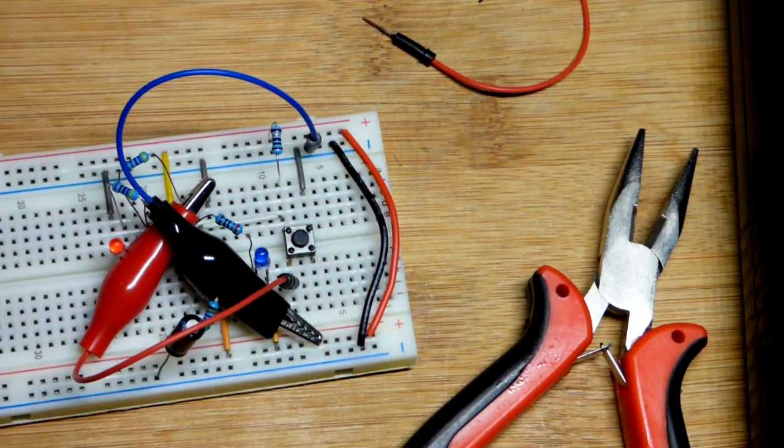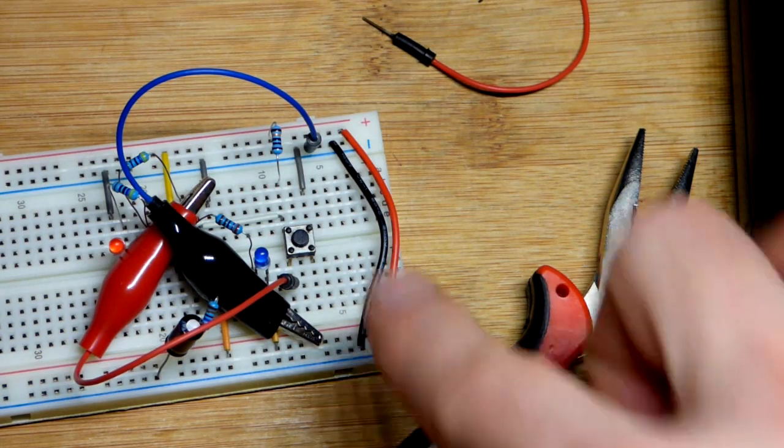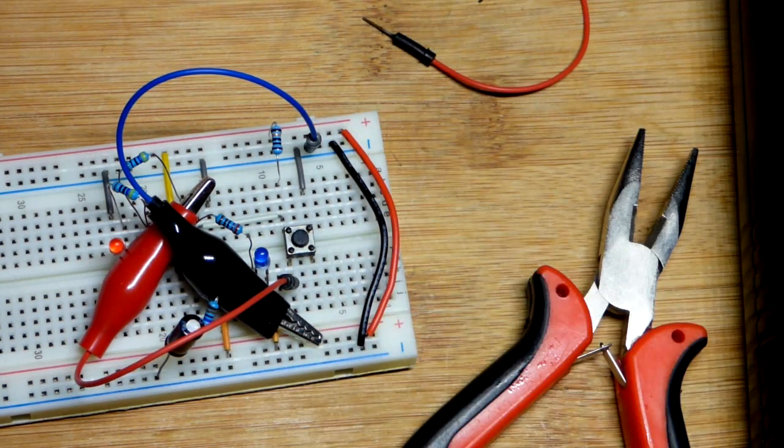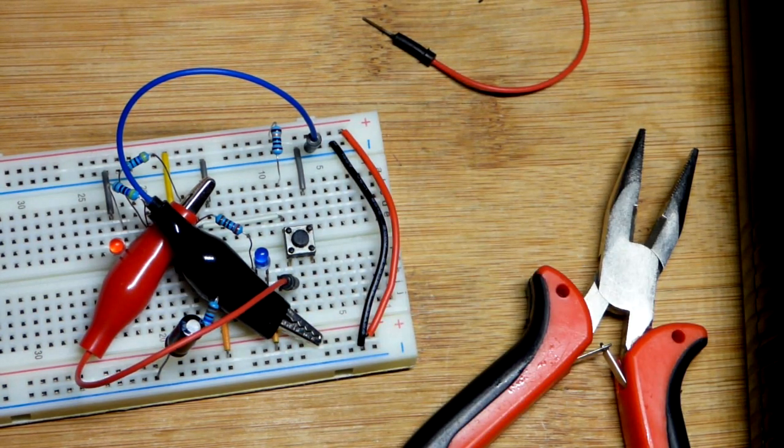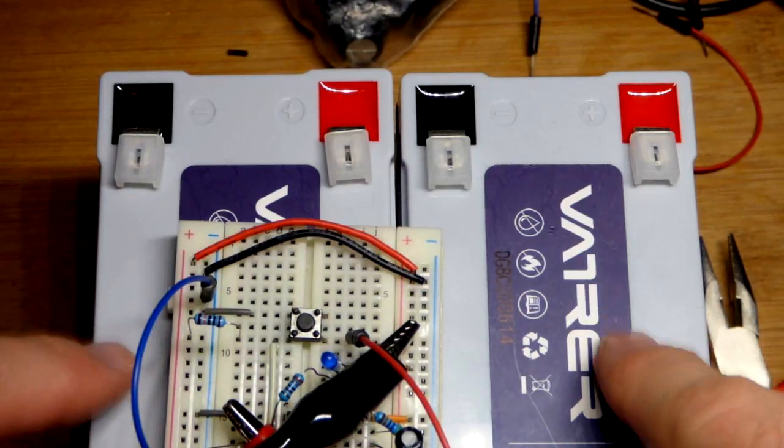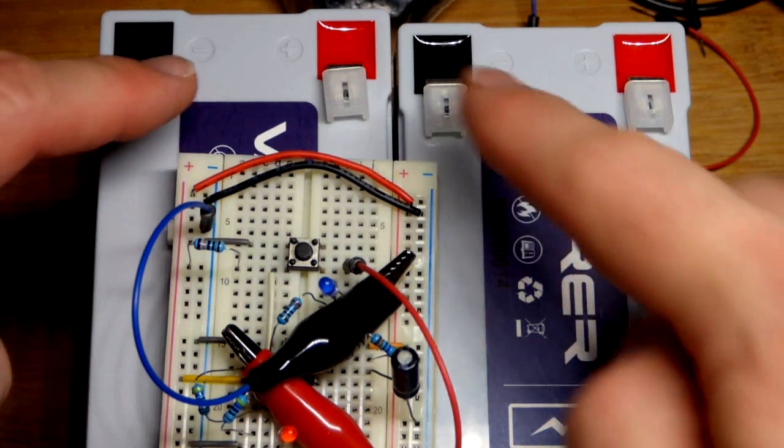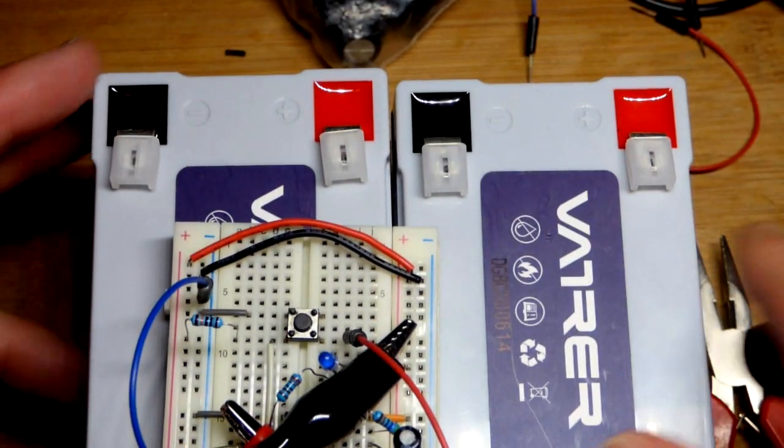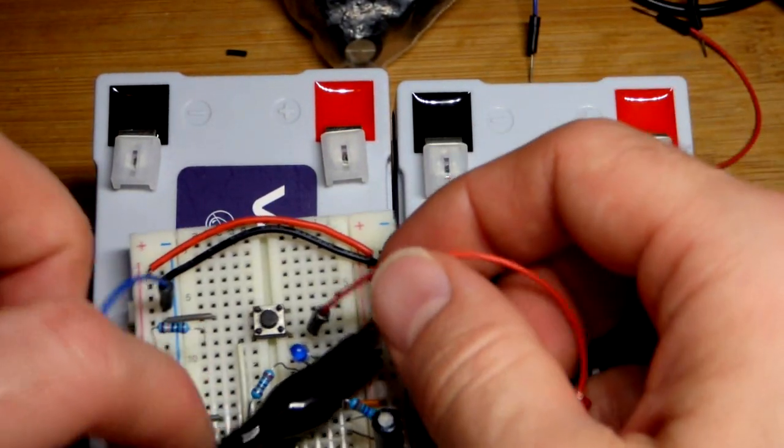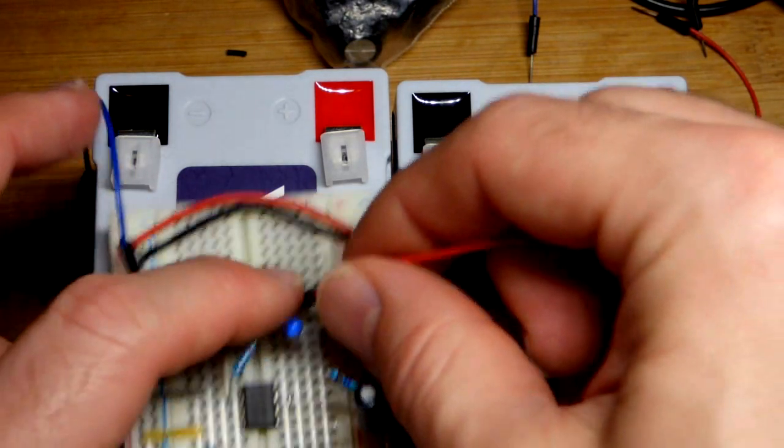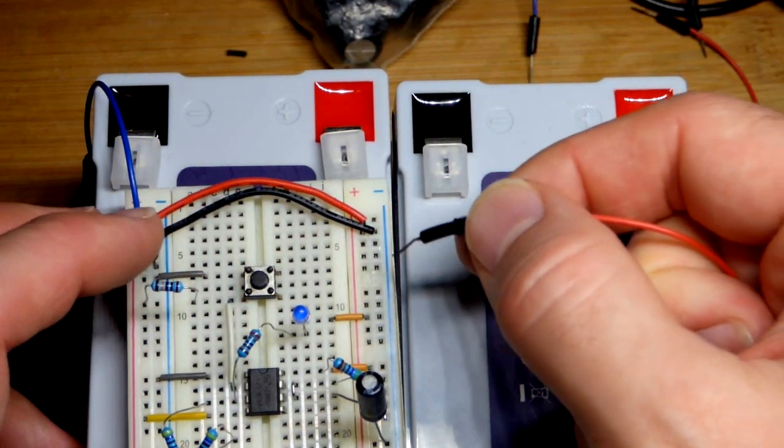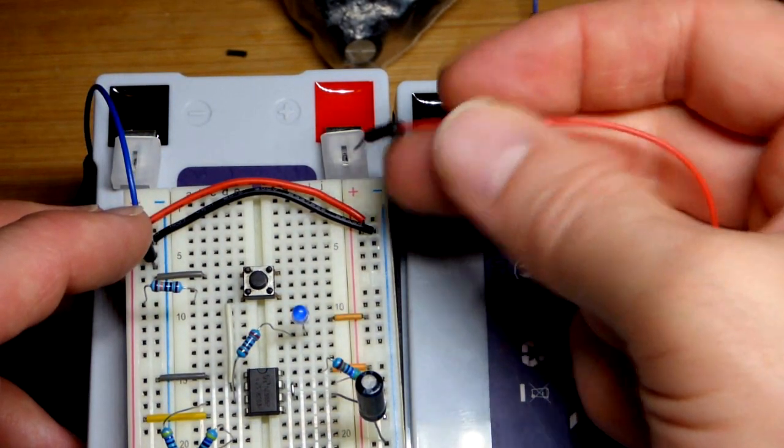Now we got my two seven amp hour lithium iron phosphate batteries. They provide 12 volts. There's four lithium iron phosphate LiPo or LFP, however you want to call it, cells.